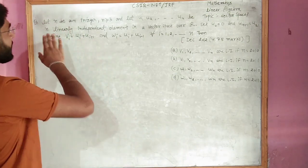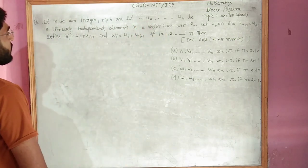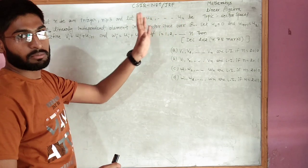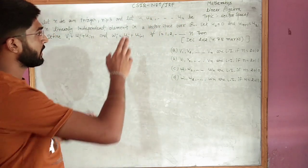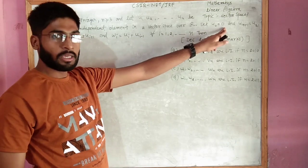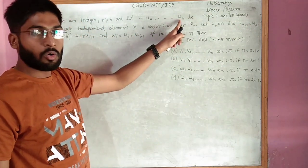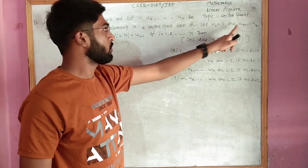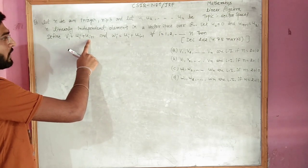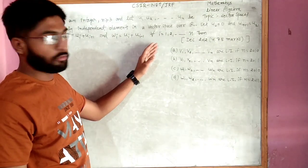Let n be an integer where n ≥ 3, and let u1, u2, ..., un be n linearly independent (LI) elements in a vector space over ℝ. We fix u0 = 0 and u(n+1) = u1. We then define vi = ui + u(i+1) and wi = ui + u(i-1) for all i from 1 to n.